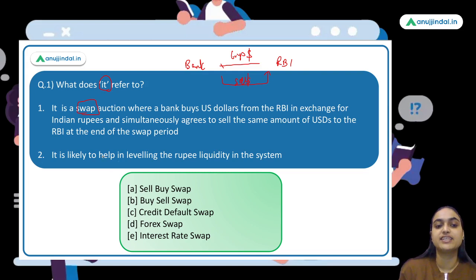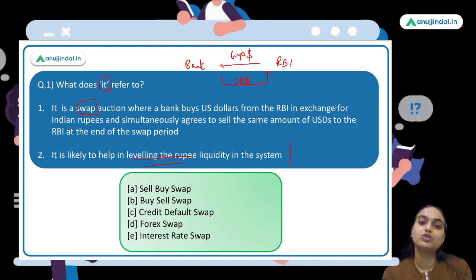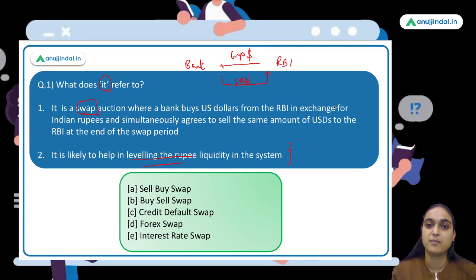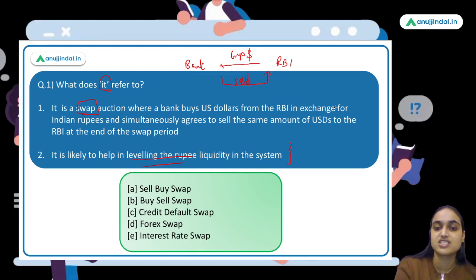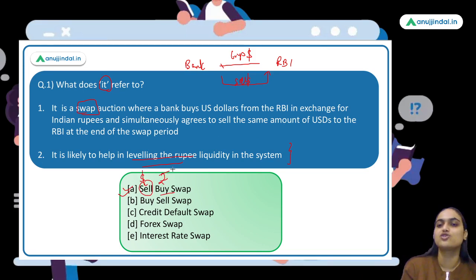The second statement says it is likely to help in leveling the rupee liquidity in the system. Consider the present situation where liquidity is in surplus — RBI wants to suck that excess liquidity. One mechanism it can use is this kind of swap auction, where RBI sells dollars and buys back rupees, thereby absorbing liquidity. This is called a sell-buy swap. The answer is option A.